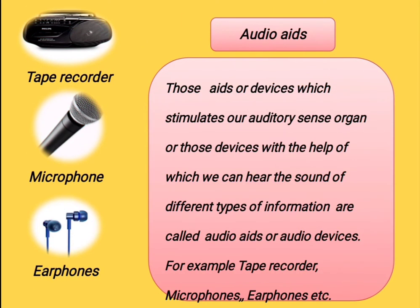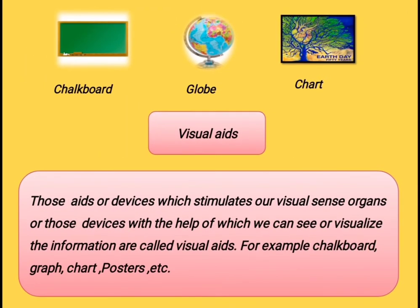You must have seen tape recorder, microphone, earphones, etc. What are these devices? These are audio devices. These devices help us to hear different types of sound. So, audio devices are those devices which stimulate our auditory sense organs and with the help of which we can hear the sound of different types of information. For example, tape recorder, microphones, earphones, etc.